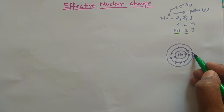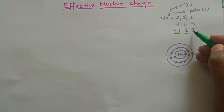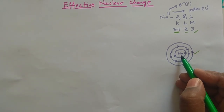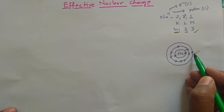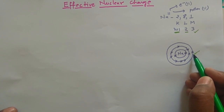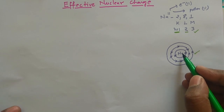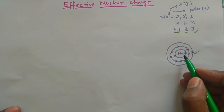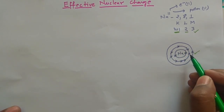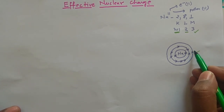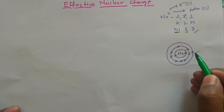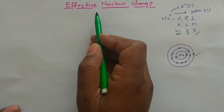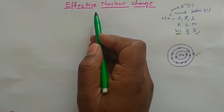For the outermost M shell electron (principal quantum number 3), the influence of the 11 protons is very very less. So although the nuclear charge corresponds to 11 protons, the magnitude felt is different for the two K shell electrons, different for the eight L shell electrons, and even less for the outermost electron. This difference in nuclear charge felt by different electrons is known as the effective nuclear charge.